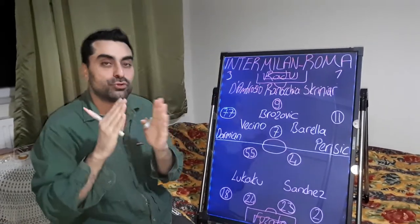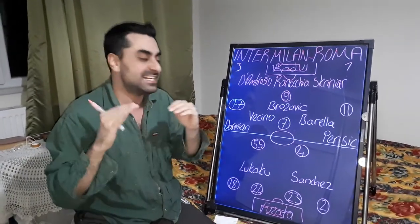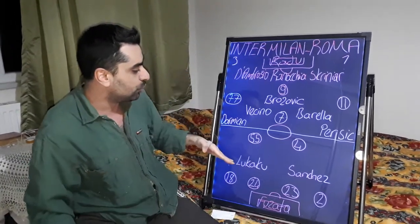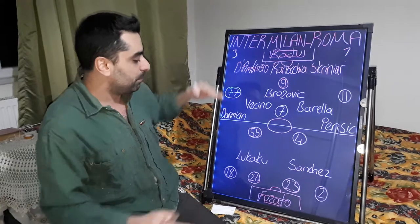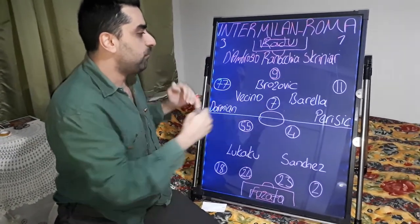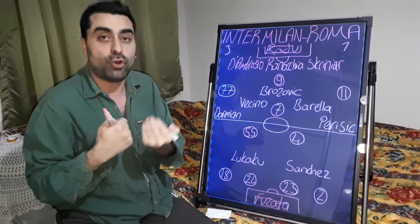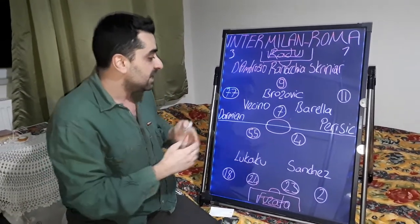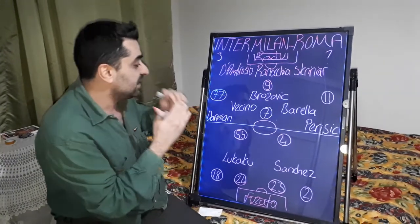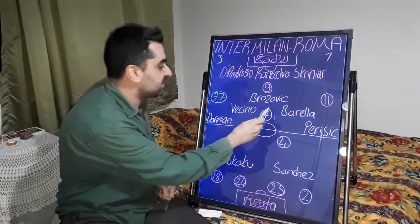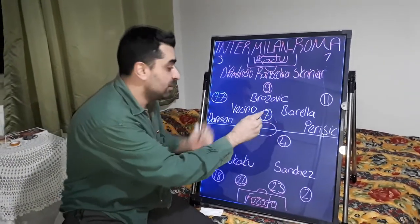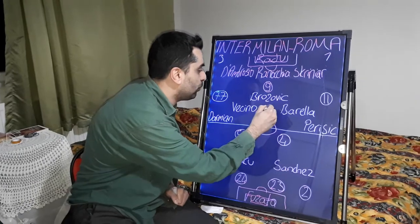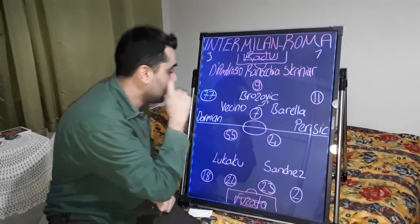Inter played in Antonio Conte's classical formation 3-5-2, and Roma played in the 4-2-3-1 formation of Paolo Fonseca. In this game, in the midfield, Lorenzo Pellegrini played 1v1 versus Brozovic.